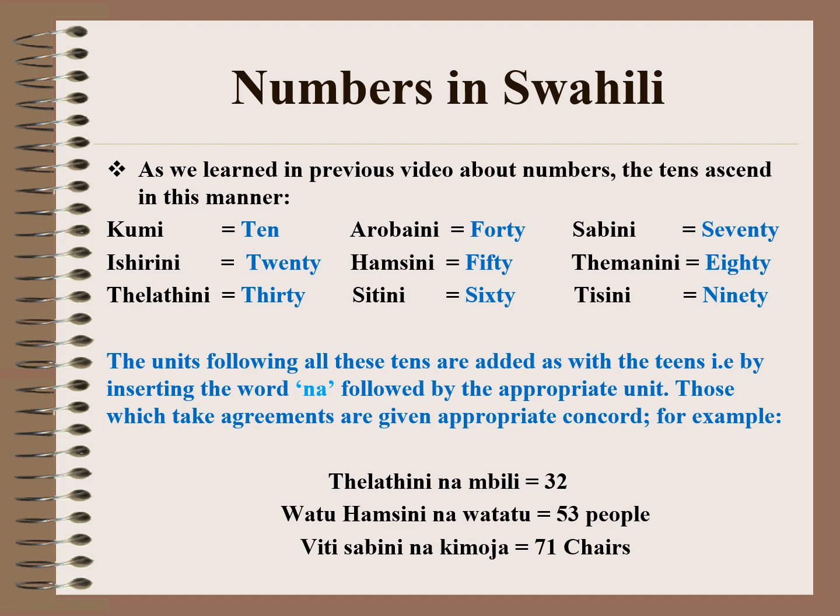Those which take agreements are given appropriate concord. For example, Thelathini na mbili means 32. Watu hamsini na watatu means 53 people. Although 3 is tatu, when you refer to people, you add wa. Instead of saying watu hamsini na tatu, you say watu hamsini na watatu. When referring to chairs, like 71 chairs, we say viti sabini na kimoja, not viti sabini na moja.